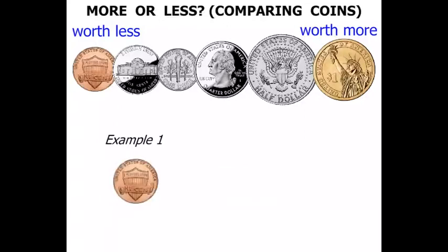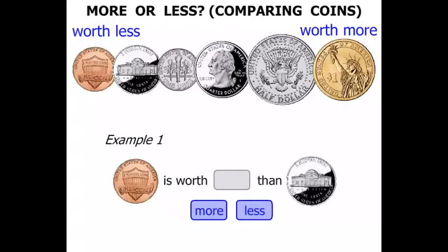This next one we have a penny is worth more or less than a nickel. Well a penny is worth 1 cent. A nickel is worth 5 cents. So the penny is worth less than the nickel.